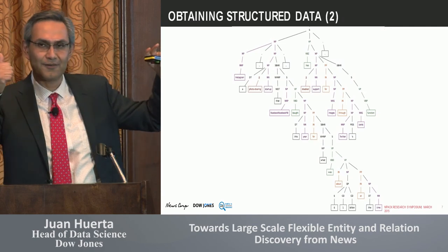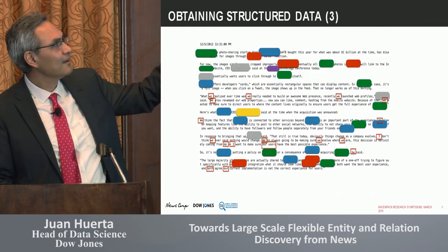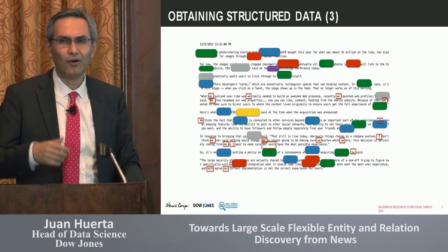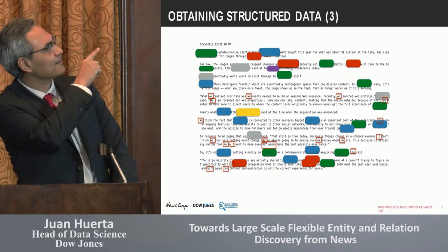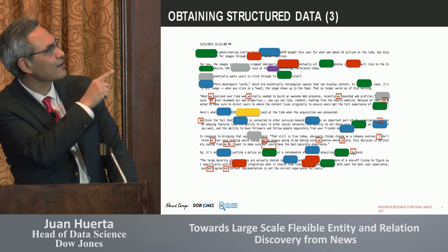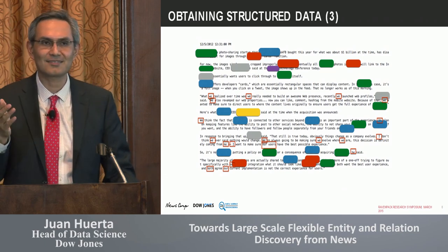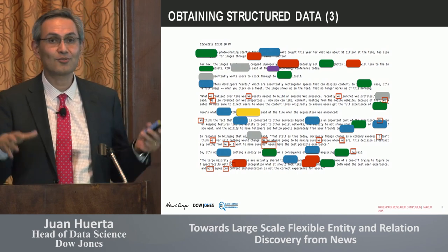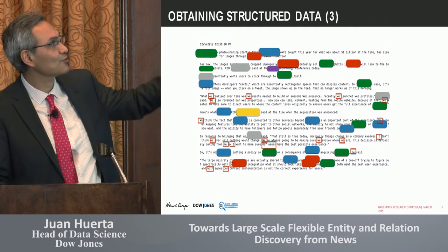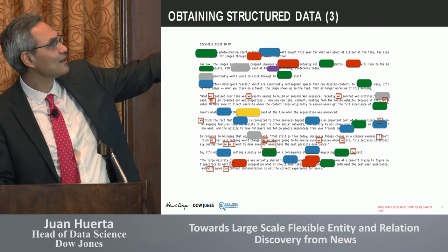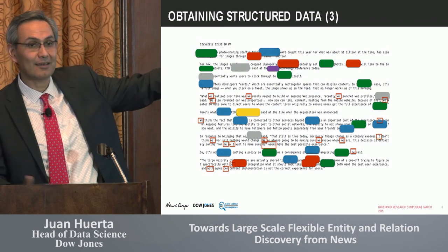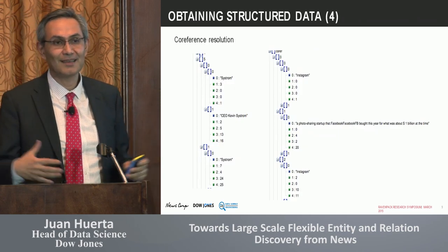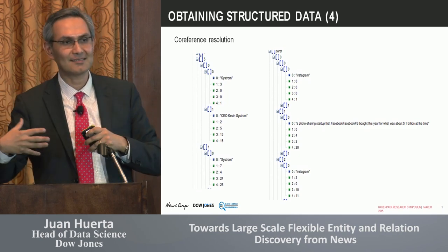The third step — after identifying entities and doing the parsing — is to find all the pronouns: personal pronouns like me, I, you, we. All of them refer to somebody. For example, when a sentence in the fourth paragraph says 'what we realized over time was that we really needed to build an awesome web presence' — that 'we' refers to Instagram. Before we do large-scale analysis and start mining data, we need to resolve that those instances of 'we' refer to Instagram. By adding all these pronouns, I'm actually extending the number of entity mentions in the text — almost doubling it to about 30 mentions I have to deal with.